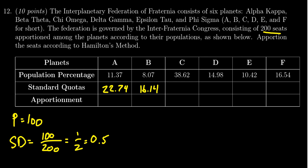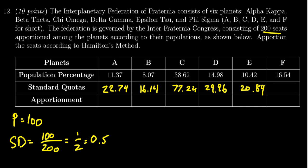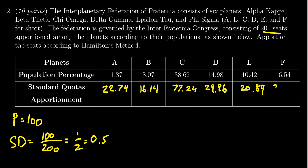38.62 times it by two you get 77.24. 14.98 if you times that by two you're going to get 29.96. 10.42 times 2 gives you 20.84, and then lastly 16.54 if you times that by two you're going to get 33.08.